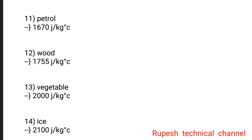Question number 11: Petrol — 670 joule per kg degree Celsius. Question number 12: Wood — 1715 joule per kg degree Celsius.